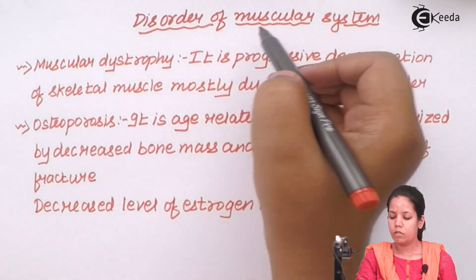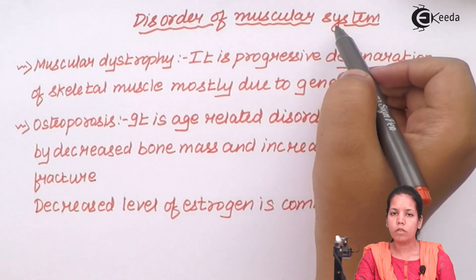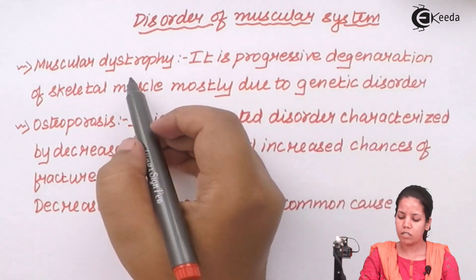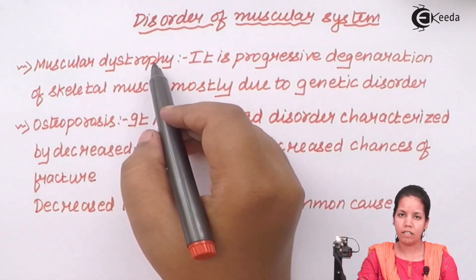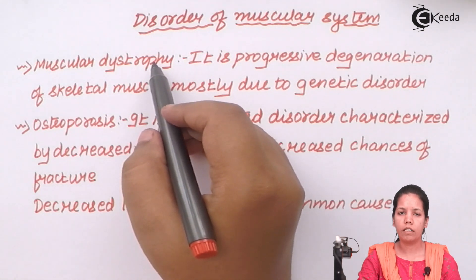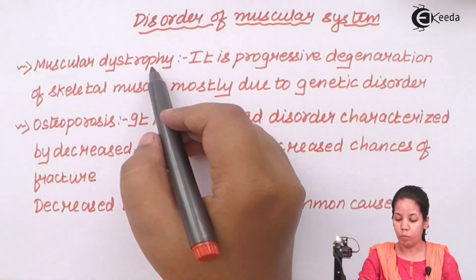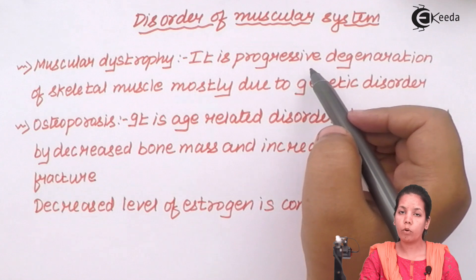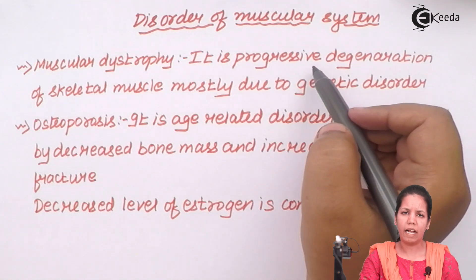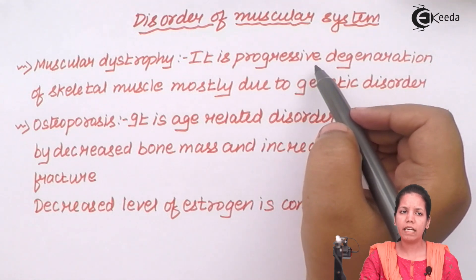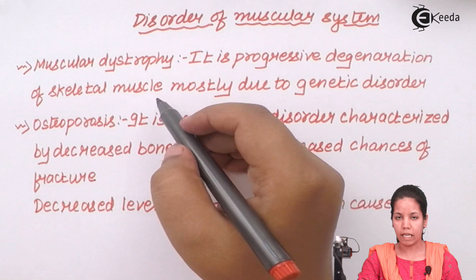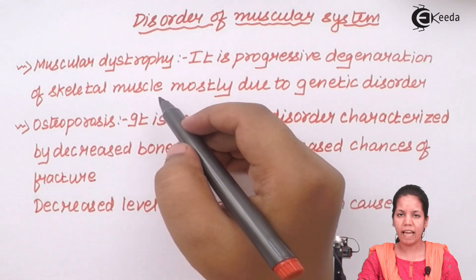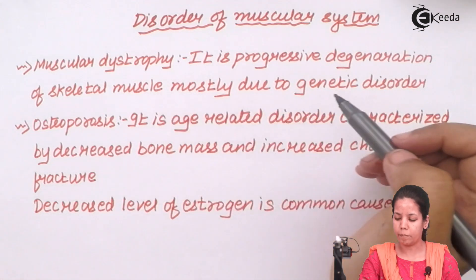Disorders of the muscular system. The first disorder is muscular dystrophy — when I say dystrophy, I simply mean disorientation of your bones. It is progressive, meaning it takes place gradually. It is a degeneration of your skeletal muscles and takes place over the course of time.